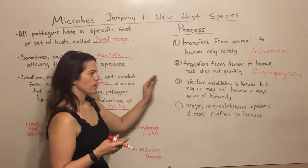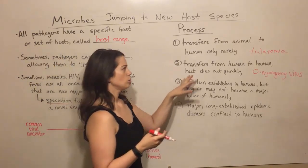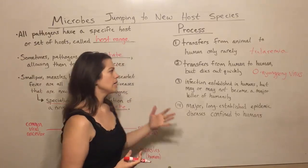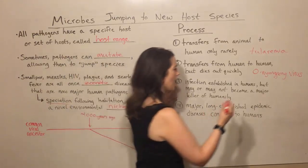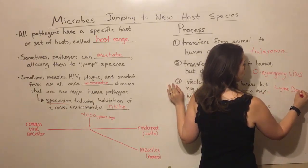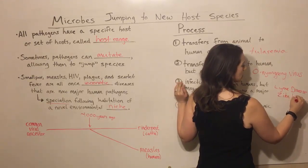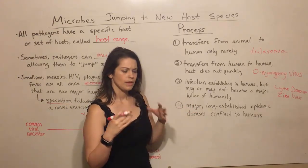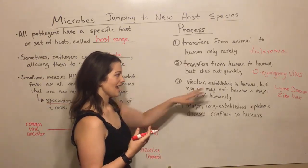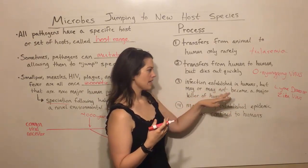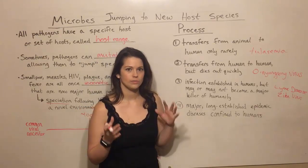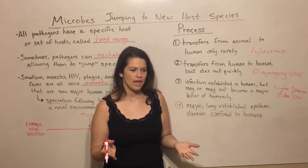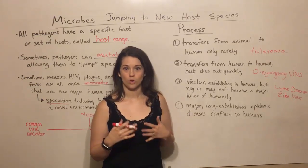Step three is when an infection actually becomes established in humans — not only can it transfer from human to human, but it's doing so on a fairly regular basis and is not something that dies out quickly. Some would put Lyme disease and the Zika virus into this category. With both Lyme disease and Zika, people get them and it's happening a lot. It's established in humans, but hasn't necessarily become a major killer. Even though Zika was pretty scary for a couple of years in South America, that epidemic has really died down and it's unclear whether Zika will be a major concern in the future.